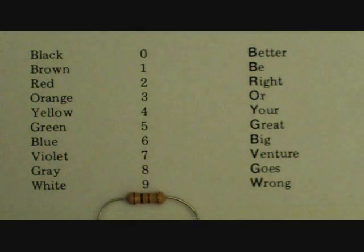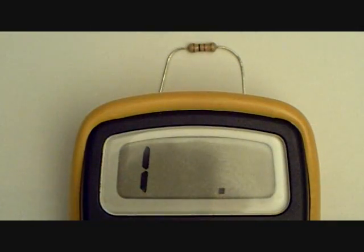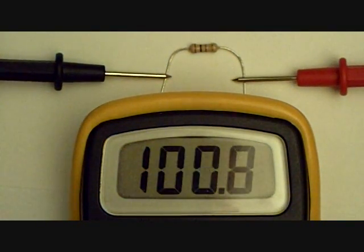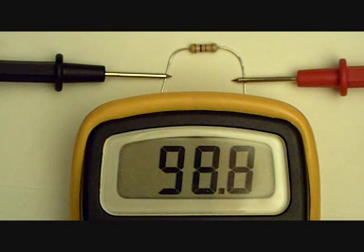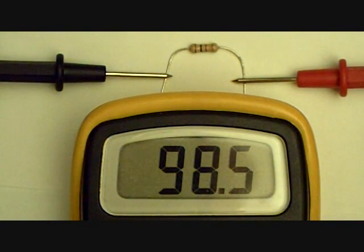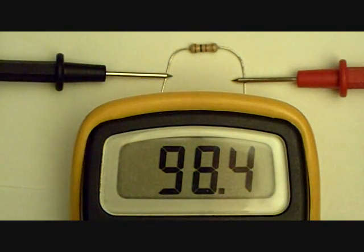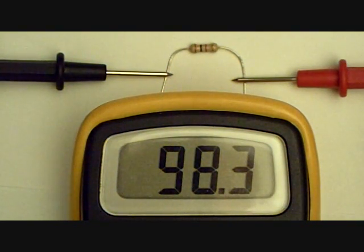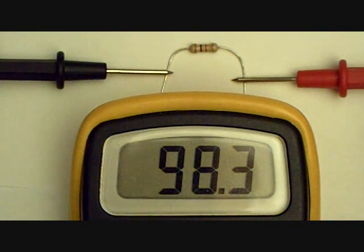Let's hook a meter up to this resistor and see how close it is. Here's the 100-ohm resistor and we have the meter — it's a multimeter. Let's hook up the probes and see what it says. It reads 98.6 ohms. It's supposed to be a 100-ohm resistor with 5% tolerance. It's within the tolerance level and very close to 100 ohms, so our system is working.